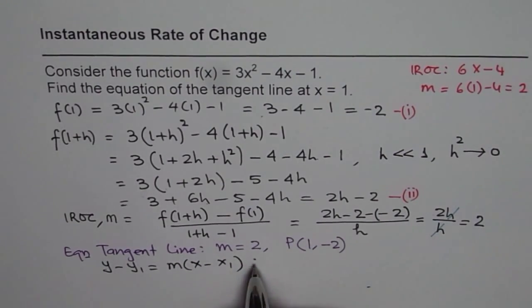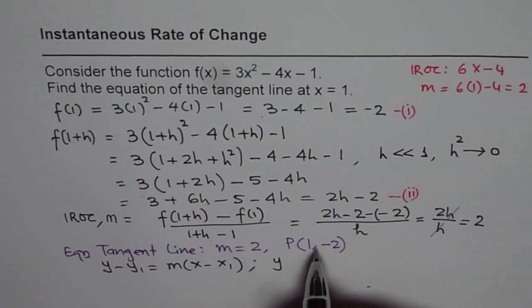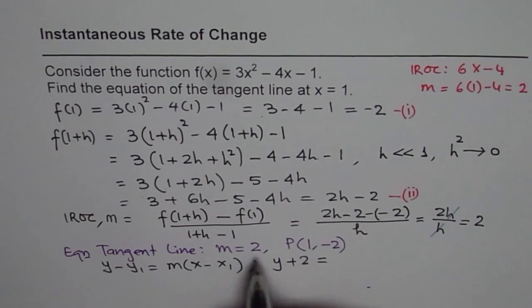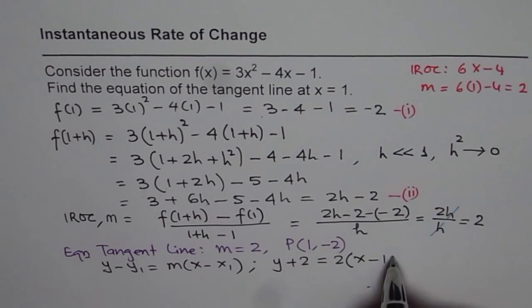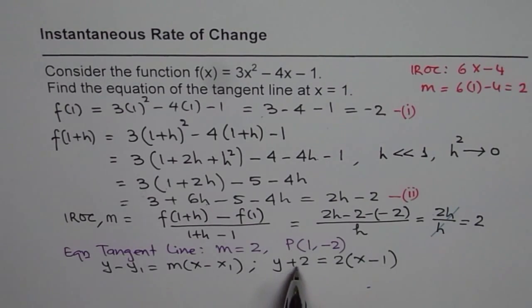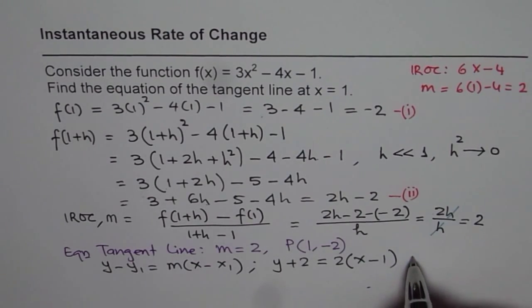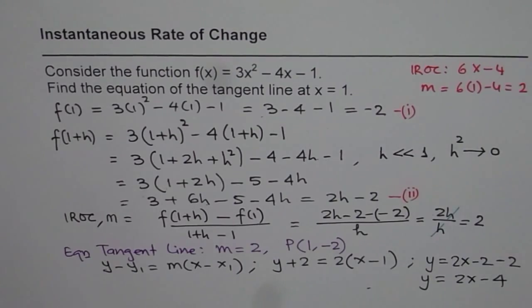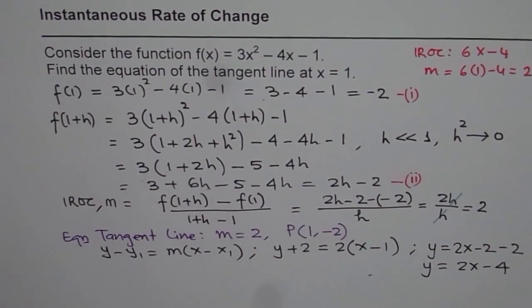I get the equation as y - (-2), which is y + 2, equals to m is 2 times x - x₁ is 1. From here, we can rearrange it and write this as y = 2, bringing 2 on that side. We get 2x - 2 - 2. So we have equation as y = 2x - 4 as equation of the tangent line.